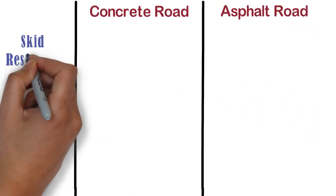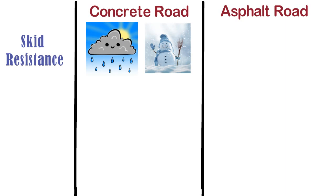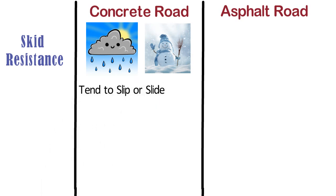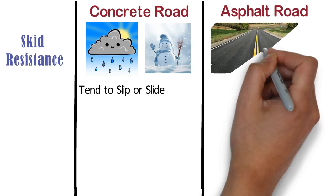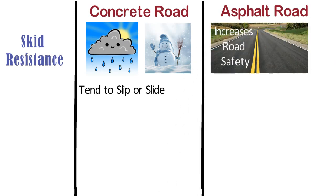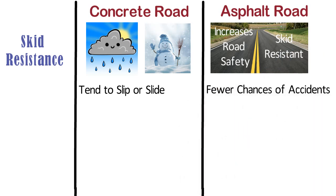Skid resistance. In rainy and winter seasons, vehicles tend to slip or slide on a concrete road due to rain and snow. Whereas asphalt roads increase road safety — they are skid resistant, and with better traction there are fewer chances of accidents.